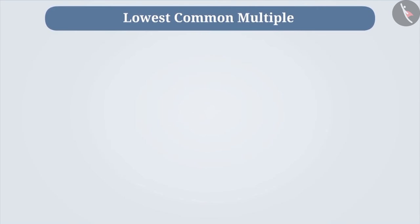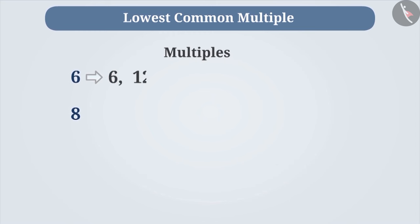Let's now learn about the lowest common multiple or LCM. To understand this, let's find the multiples of 6 and 8. The multiples of 6 are 6, 12, 18, 24, 30, 36, etc.